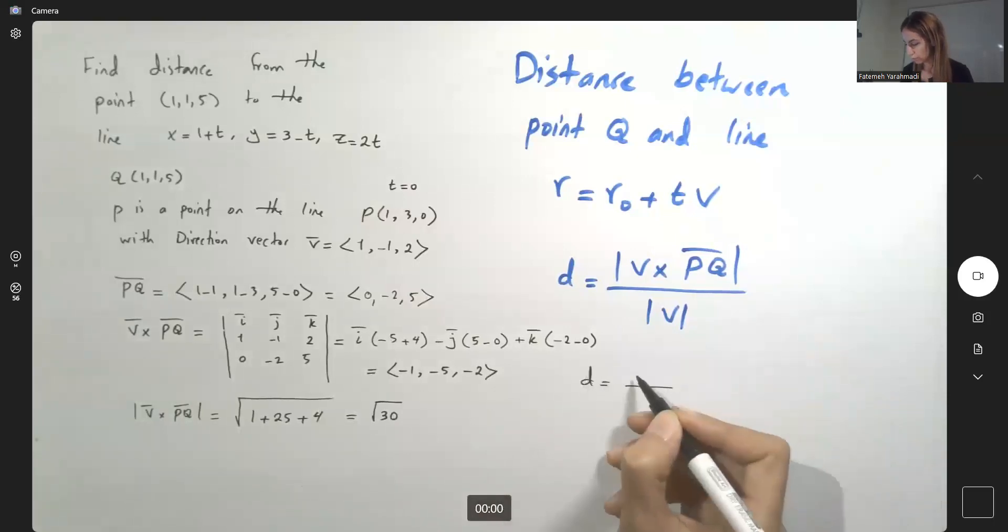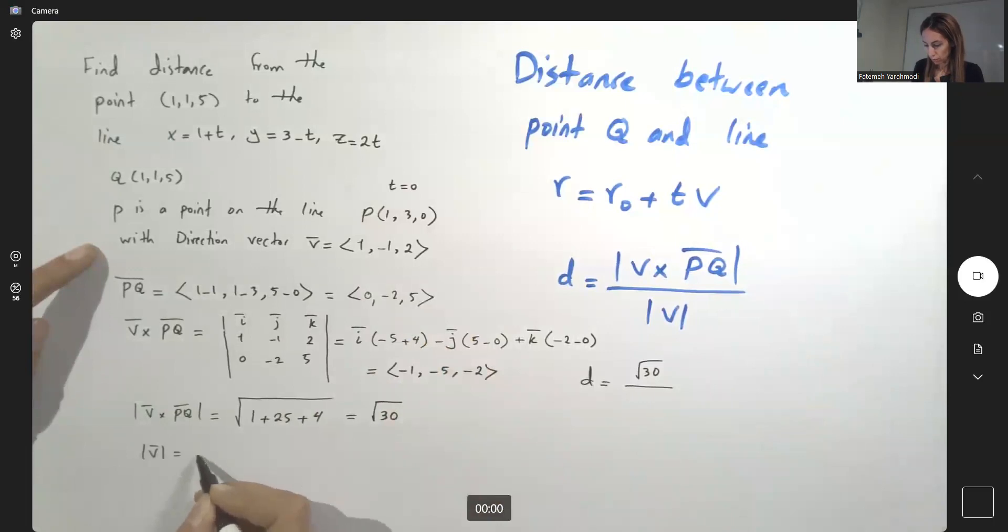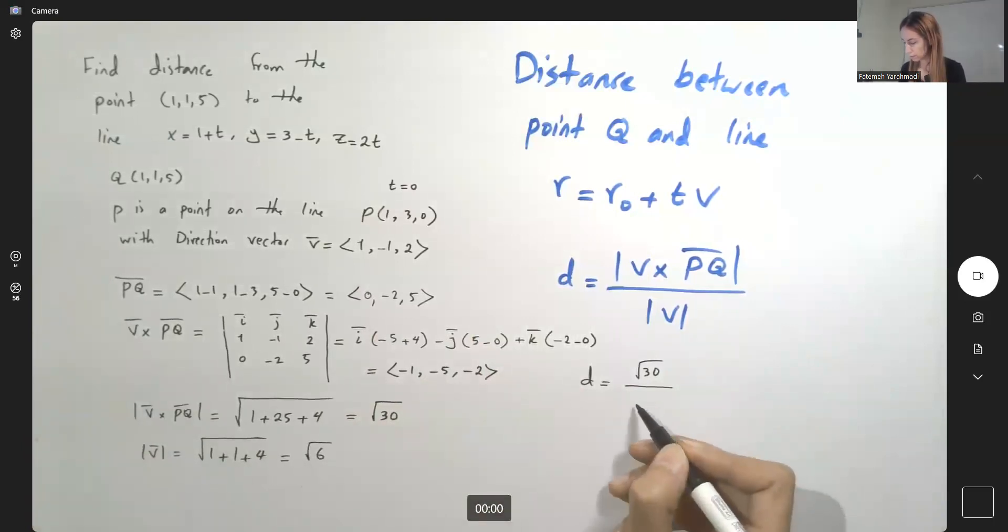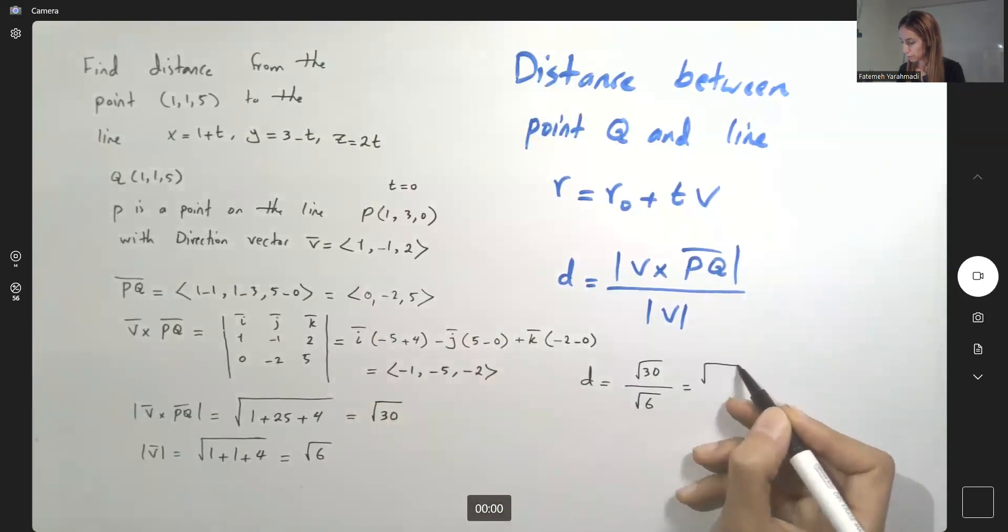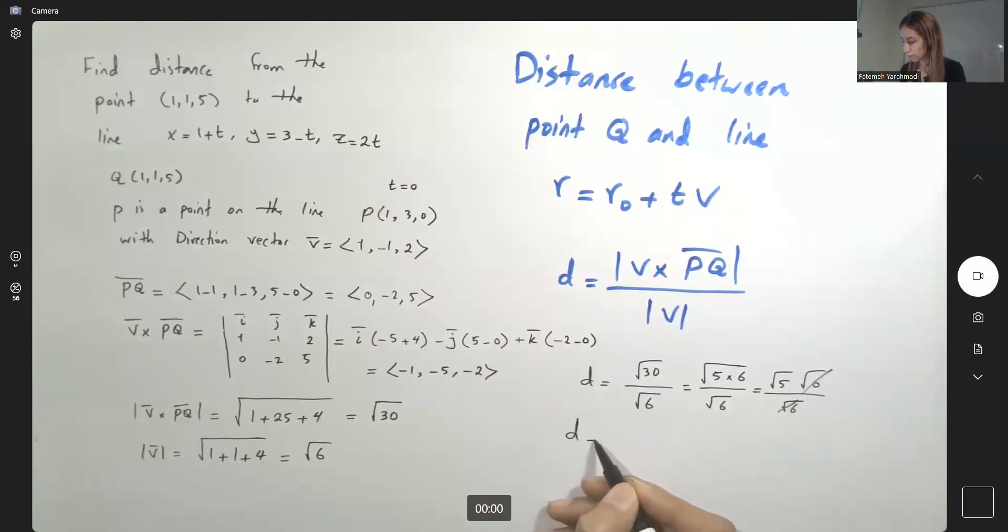So V cross PQ is square root of 30. But what is the magnitude of V? The magnitude of V is equal to square root of 1 squared, 1 plus negative 1 squared, 1 plus 4 which is square root of 6. So 30 is 5 times 6 divided by square root of 6. So at the end, square root of 5 times square root of 6 divided by square root of 6. So D or the distance is equal to square root of 5.